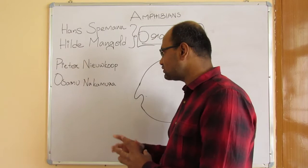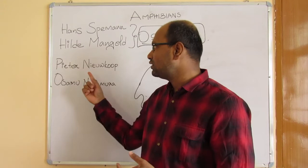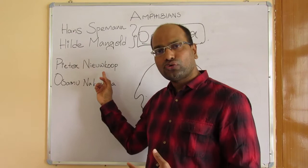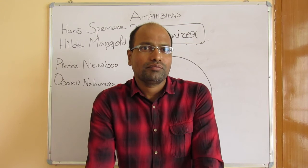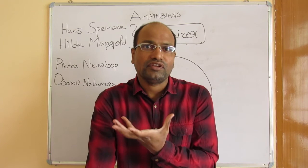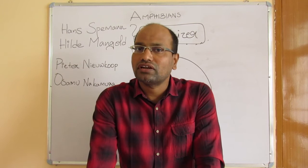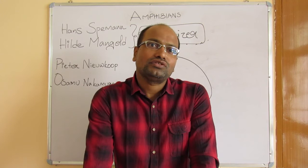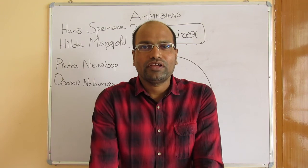Peter Nieuwkoop made major contributions, identifying that the proteins present in the vegetal cells are not uniformly distributed — certain proteins are present in the dorsal side of the vegetal cells and others in the ventral side, and these are responsible for organizing the organizers. This led to understanding why organizers have the special ability to decide developmental stages in amphibian organisms.